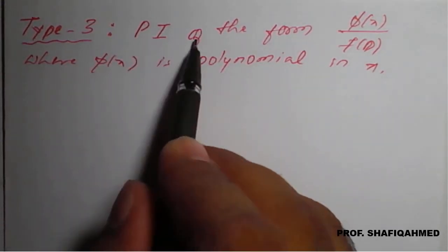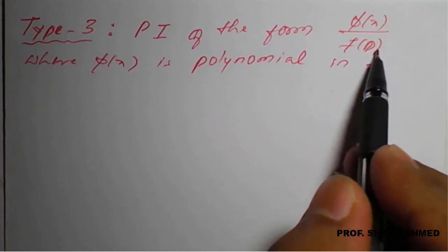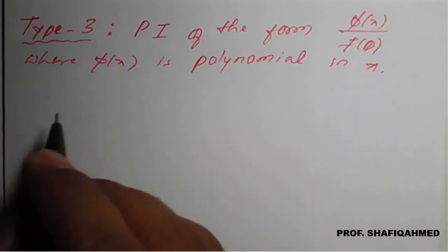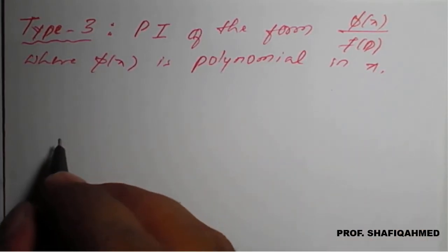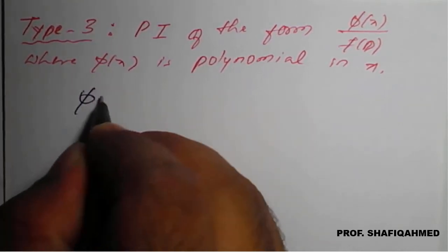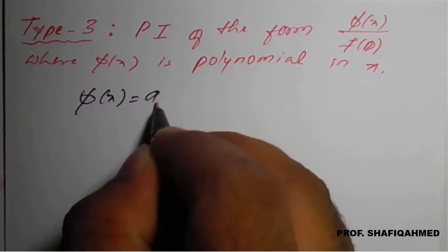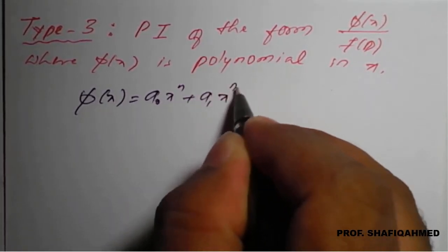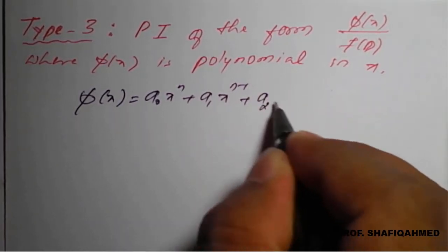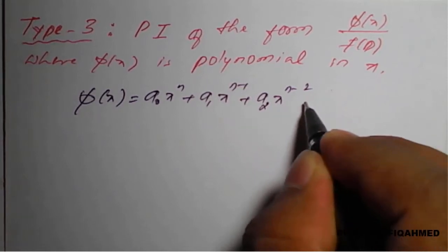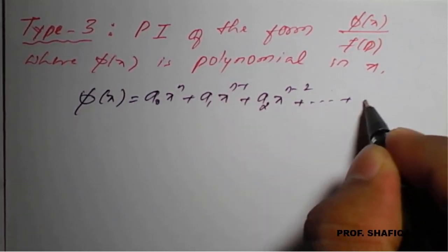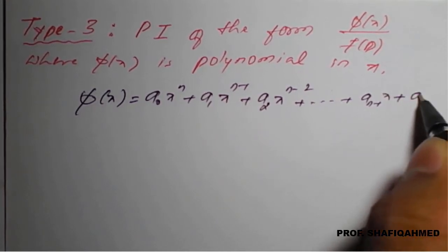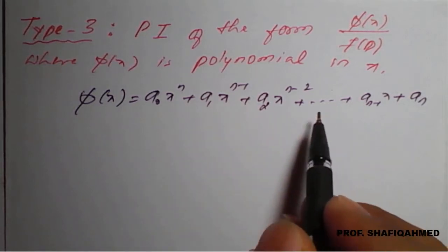Type 3 says particular integral of the form φ(x) upon f(D), where φ(x) is a polynomial in x. So φ(x) may be in the form of a₀xⁿ + a₁xⁿ⁻¹ + a₂xⁿ⁻² + ... + aₙ₋₁x + aₙ, where aₙ is a constant.